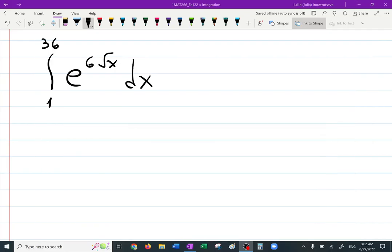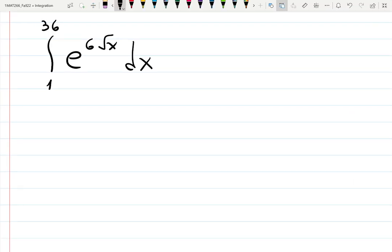So the integral from 1 to 36 of e to the square root of x dx. Your first intuition should be to use u-substitution to make this u, even though this might be in the chapter of integration by parts. That doesn't make anything out of this problem. You need to use u-substitution almost everywhere.